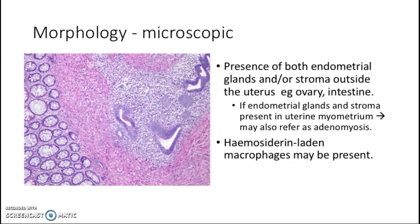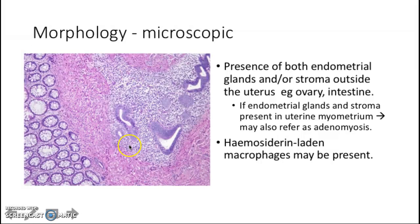Microscopically, you will see presence of either both endometrial glands and stroma, or either glands or stroma outside the uterus — for example, in the ovary or the intestine. If endometrial glands and stroma are present within the uterine myometrium, that is referred to as adenomyosis. You can also see hemosiderin-laden macrophages in the lesion. In this picture, there are endometrial glands and stroma within the bowel — this is endometriosis.